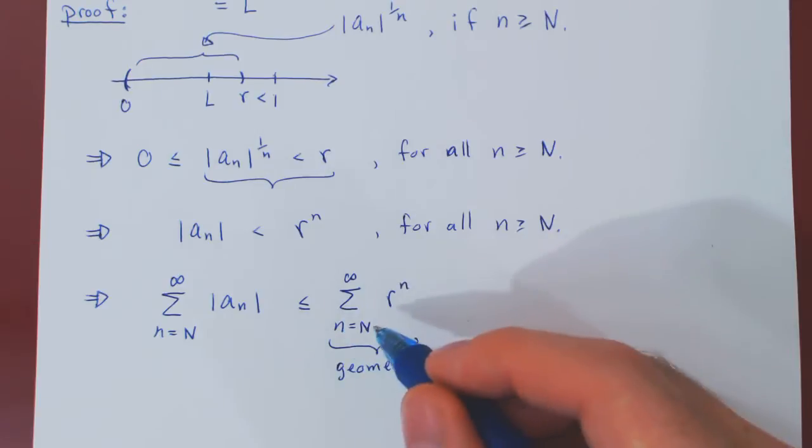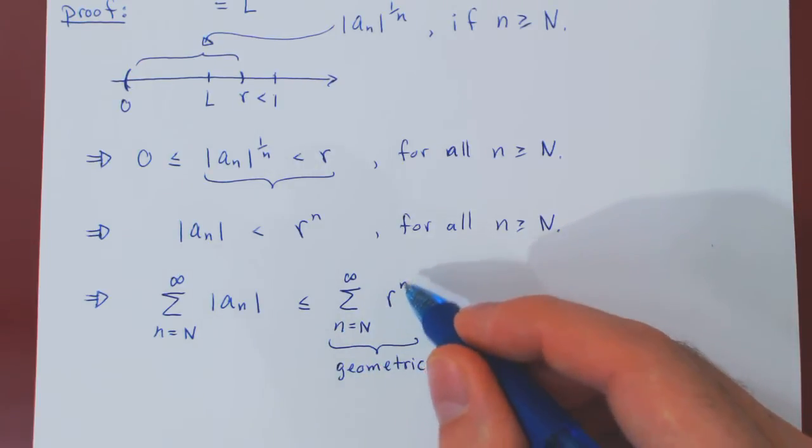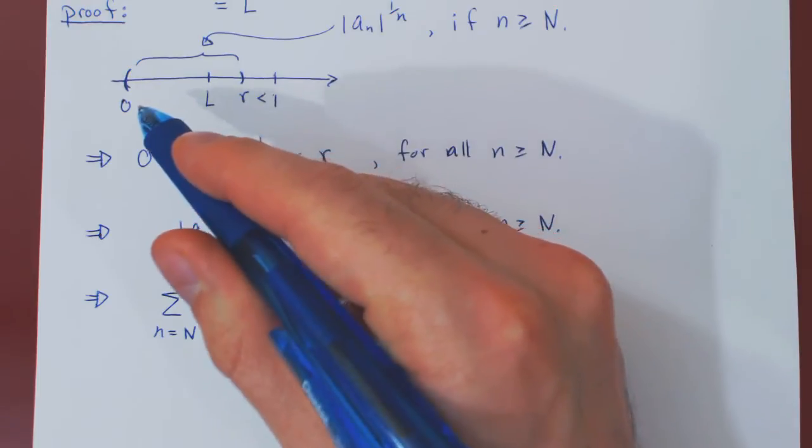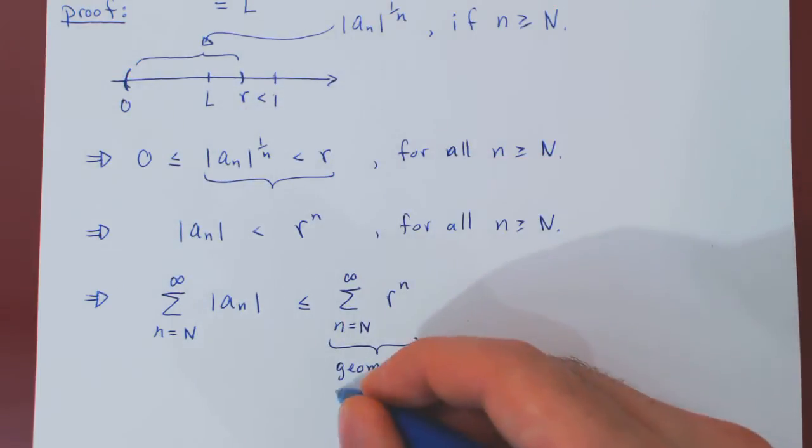And if you recall, a geometric series will converge if and only if R, the terms that we're taking the nth power of, is in absolute value strictly less than 1. Well, it's obviously the case, as R lies strictly between 0 and 1.